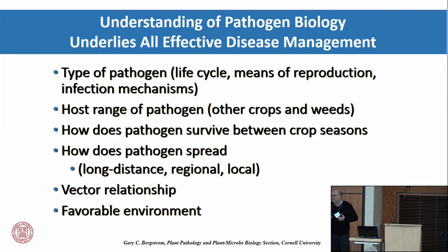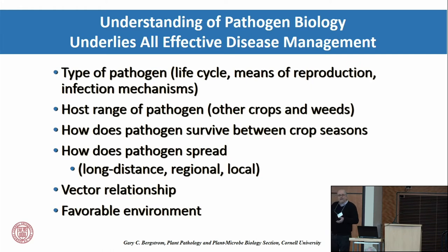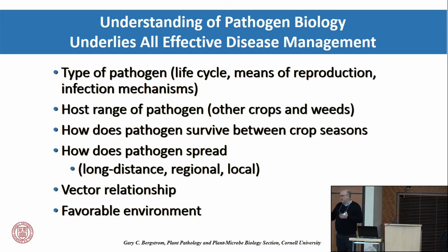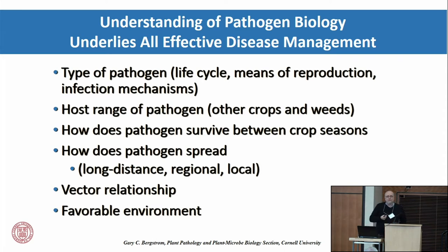Just like humans — as you know, we have more microbial cells in our body than human cells — plants have endophytic organisms living in their roots, their leaves, and their vascular system along with plant cells. That balance between the good guys and the bad guys is going to play out, and we need to understand more about it. Some of the very essential things we need to know before we can manage a plant disease is to understand the life cycle of these pathogens — how does it reproduce?